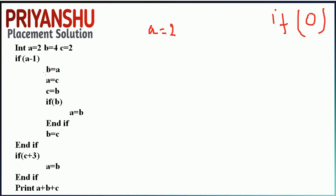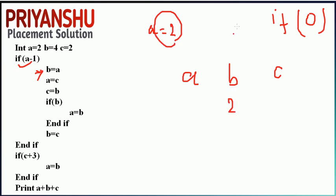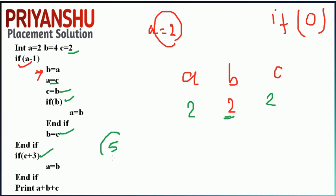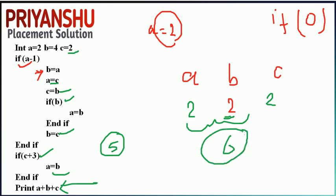The condition is true, so we swap the values: b equal to a, a equal to c, c equal to b. So b becomes 2, a becomes 2, c becomes 2 — all values are 2. Then if b (which is 2) is true, a equals b so a equals 2. Then if c plus 3 equals 5, condition is true again, a equals b. Finally a plus b plus c equals 6.